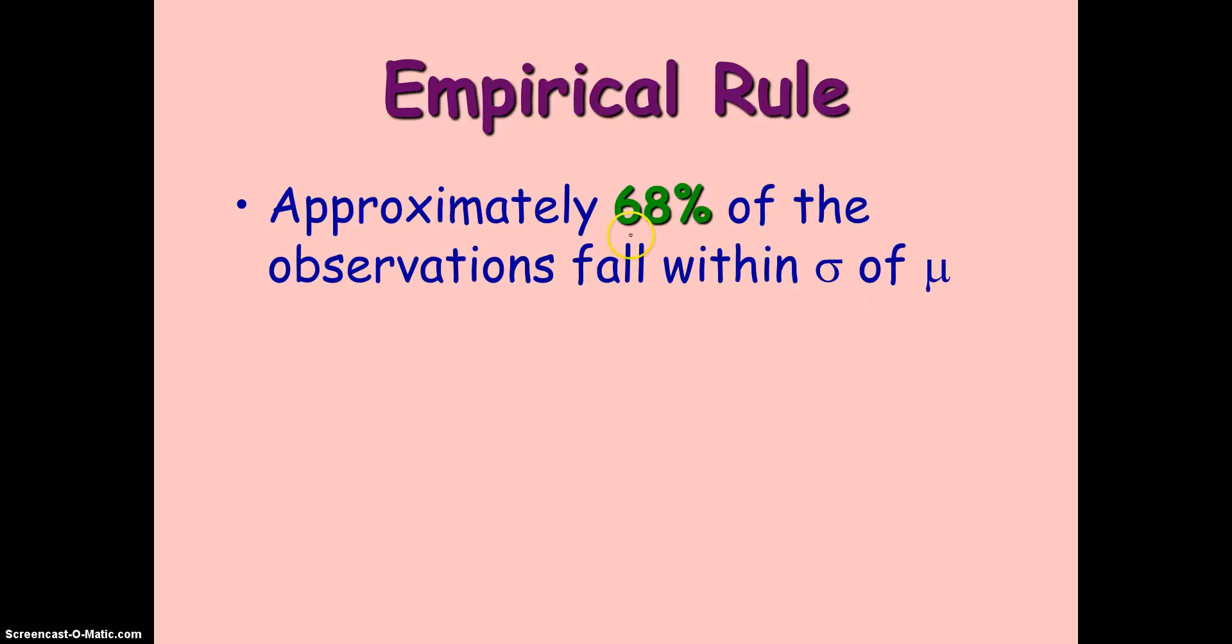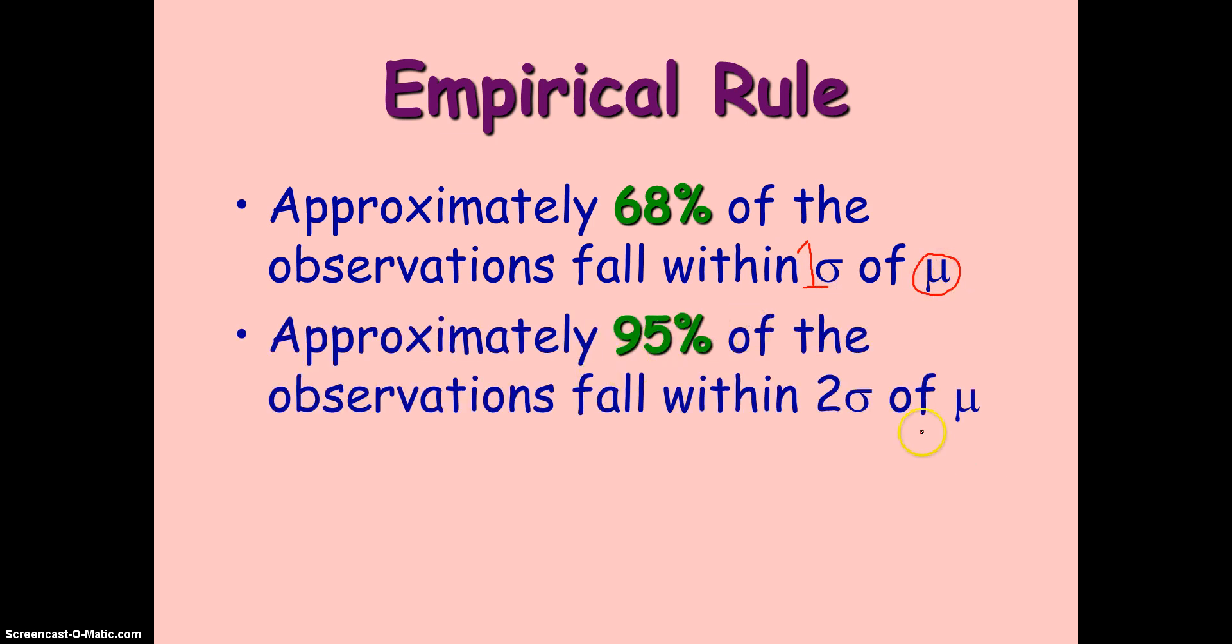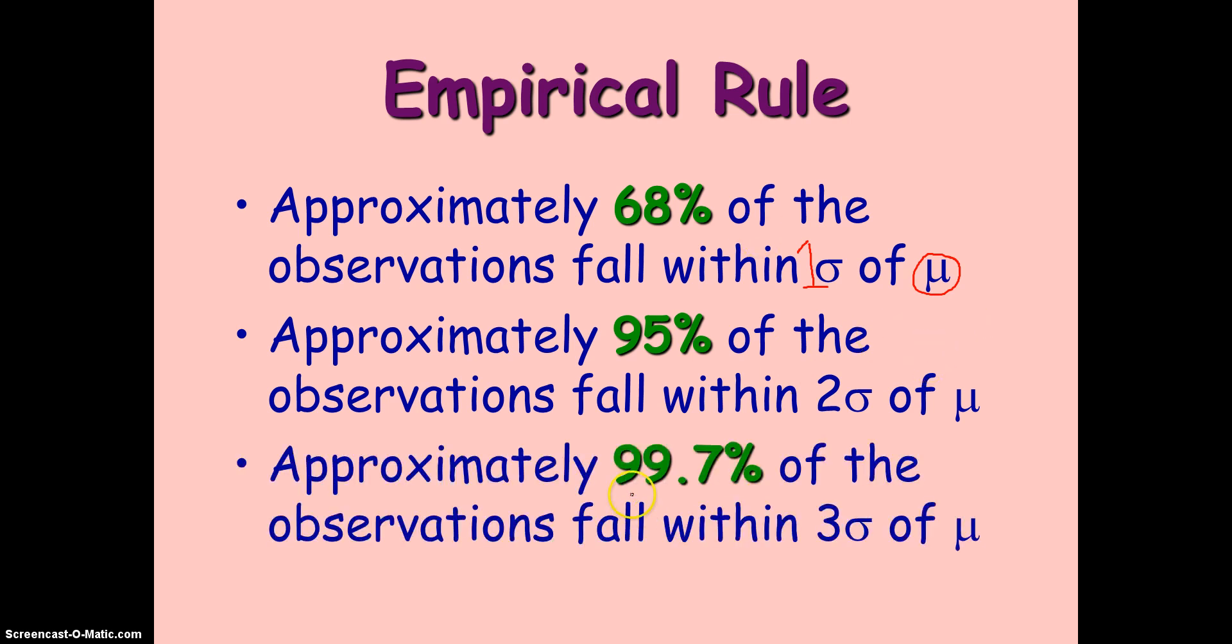The empirical rule is an important rule that helps you gauge the probability based on certain information, or a pattern we notice with all normal curves. And that is that 68% of the data, or there's 68% probability that your data falls within one standard deviation, I should say one standard deviation of the mean. And that 95% of the data falls within two standard deviations of the mean. And if you want to go even further, which AP statistics will on occasion, 99.7% of the observations fall within three standard deviations of the mean. So knowing these facts, which you should memorize, by the way, it's only a quick memorization, will very easily help us find probability statements and solutions to probability questions. Let's try an example, shall we?